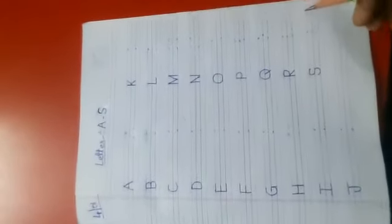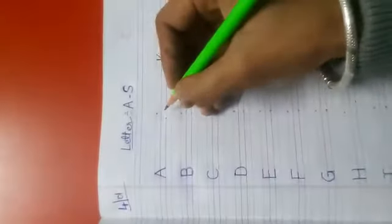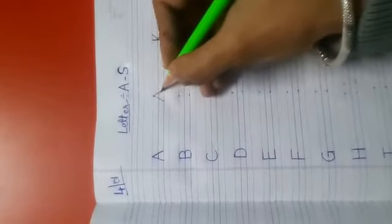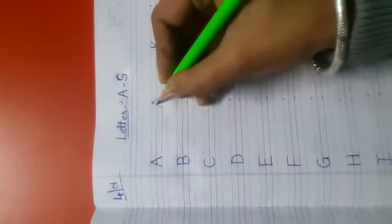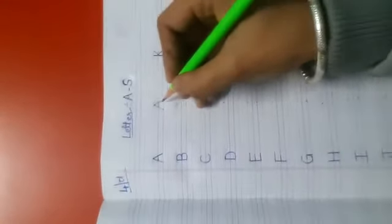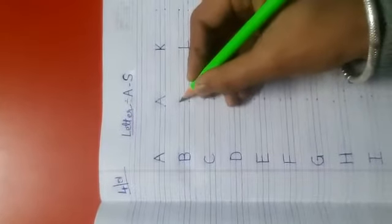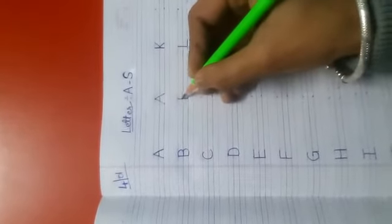So, you have to write A to S, okay? Now look here, we have to join these dots like this. This is letter A. Okay, next is letter B.